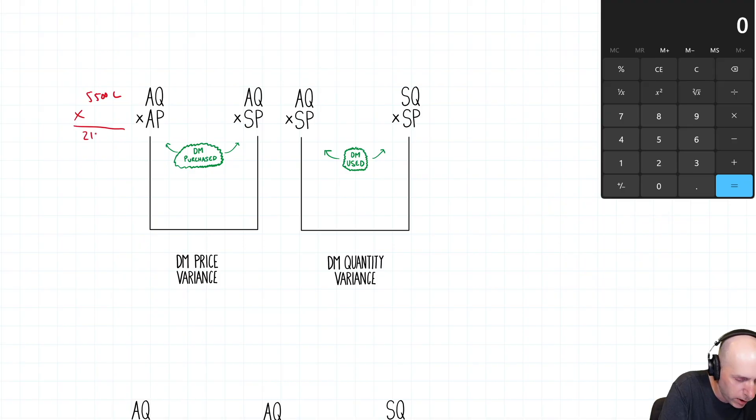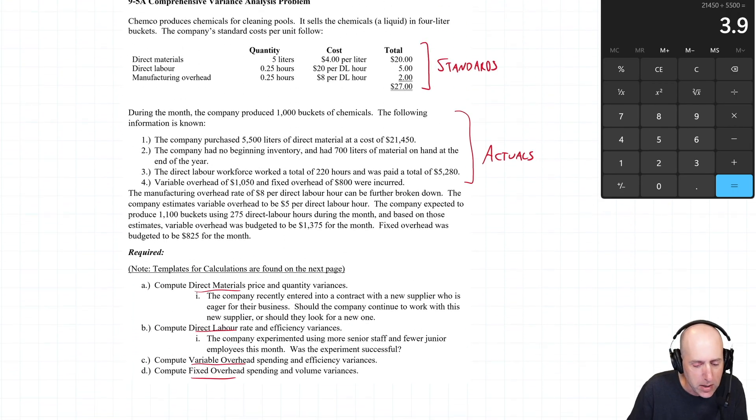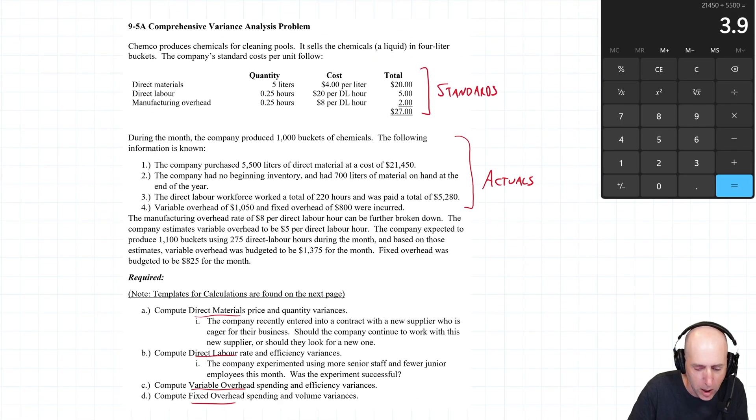So we can figure out our price that we paid per liter just by dividing the two. $21,450 divided by 5,500, $3.90 a liter is what we paid for this material. We paid $21,450 to buy 5,500 liters.